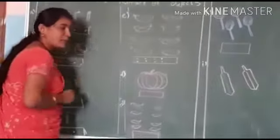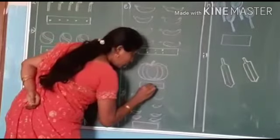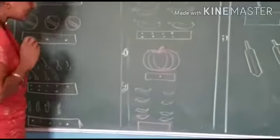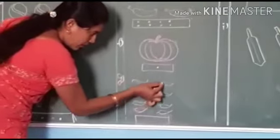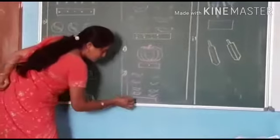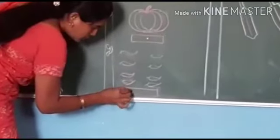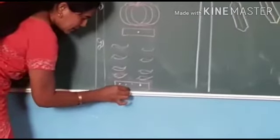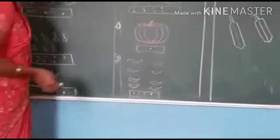Next one — how many bananas? Only one is there. So we have to put only one dot. Then next, how many cherries are raised? One, two, three, four, five, six, seven, eight. Eight cherries are raised. So we will draw dots here — one, two, three, four, five, six, seven, eight dots.